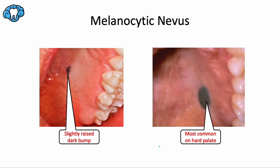Nevi of the oral mucosa are relatively rare. The most common location for oral nevi is the hard palate, followed by the buccal mucosa and then the gingiva. While they are benign and not considered premalignant, nevi of the oral mucosa should be completely excised and removed because they cannot be predictably differentiated from a melanoma based on clinical features alone. For the board exam, remember these lesions should be biopsied not because they are premalignant, but because they cannot be safely differentiated from an oral melanoma, which is malignant.